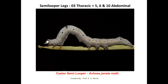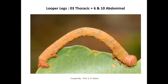The semi-looper type of larva has three pairs of thoracic legs and three pairs of abdominal legs, with the abdominal legs present on the fifth, sixth, and tenth abdominal segments — this is the castor semi-looper larva. The looper larva forms a complete loop during walking, while the semi-looper forms only a half loop. The looper larva has three pairs of thoracic legs and two pairs of abdominal legs, present on the sixth and tenth abdominal segments. These are the different types of legs found in larvae as well as in adults.